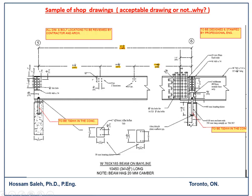You need a professional engineer stamp on the drawing. Without it, don't waste time reviewing it, because you don't know what changes a PE may need to make. The professional engineer also carries the liability to cover any mistakes and has the knowledge to correct calculations or connection details. The shop drawing shows details such as the length, opening location, end connection, and a 20mm camber — an upward deflection that straightens under dead load, reducing deflection and allowing a lighter member.